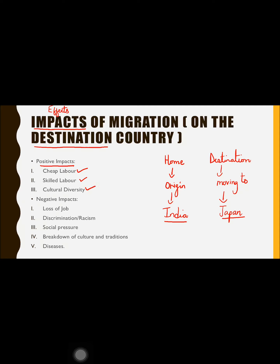The third positive impact is cultural diversity. When many people from different backgrounds move into a country, diversity increases. This helps loosen the grip of racism, encourages people to learn about other ways of living, appreciate humanity, and learn each other's cultures and traditions, ultimately helping society achieve peaceful harmony.